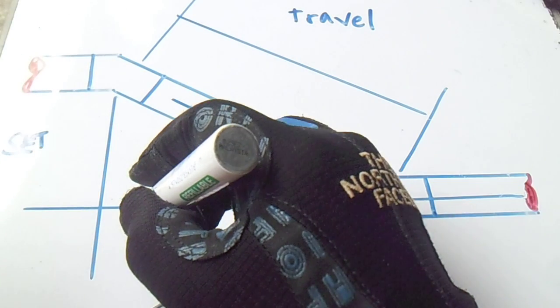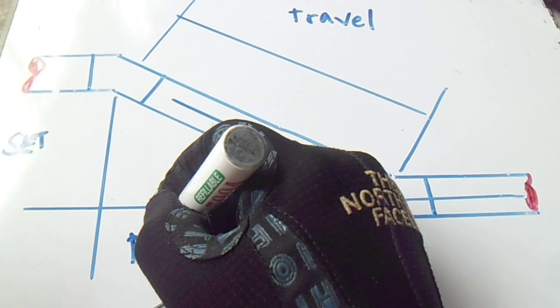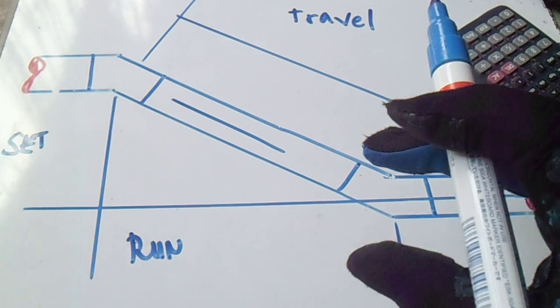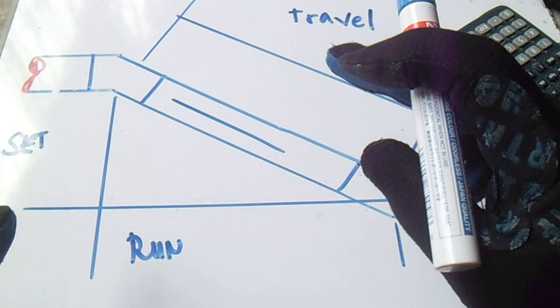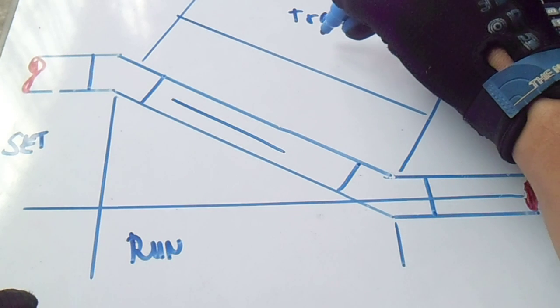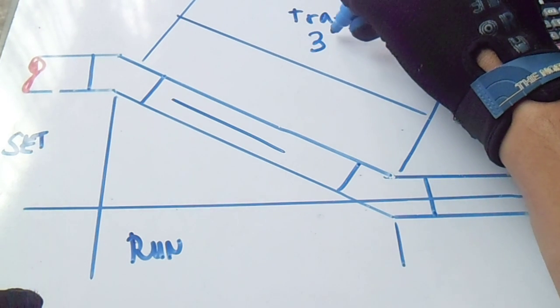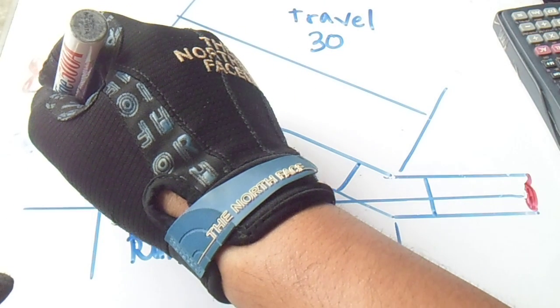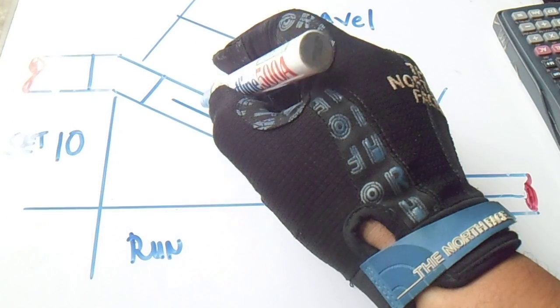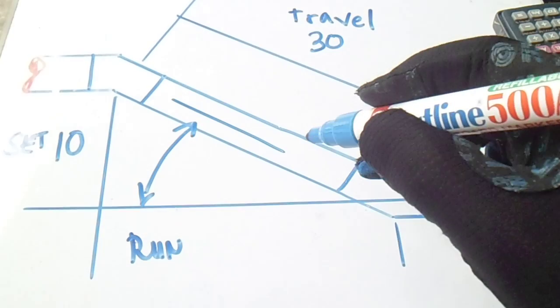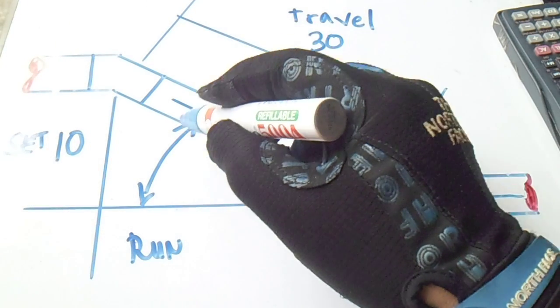And this is run. To find the angle, we have two sides given. Let's say this travel we have is 30 and we have a set of 10. Now we will compute this angle.